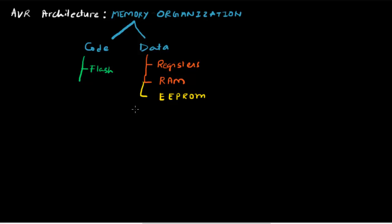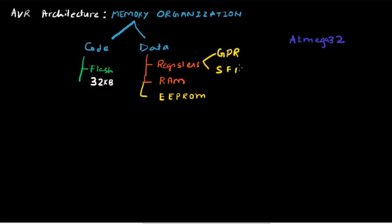This tutorial series will be discussing the AVR mega architecture, and the specific controller we'll be looking at is the ATmega32. As the name suggests, this has 32 kilobytes of flash. For registers, there are two types: general purpose registers (GPR) and special function registers (SFR). There are 32 general purpose registers and 64 special function registers.